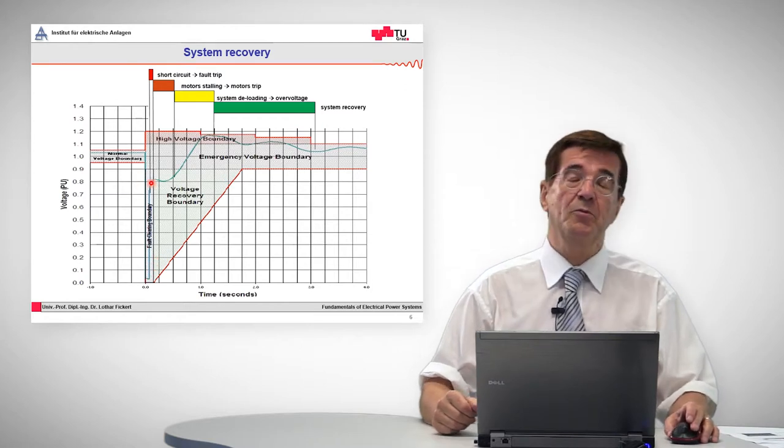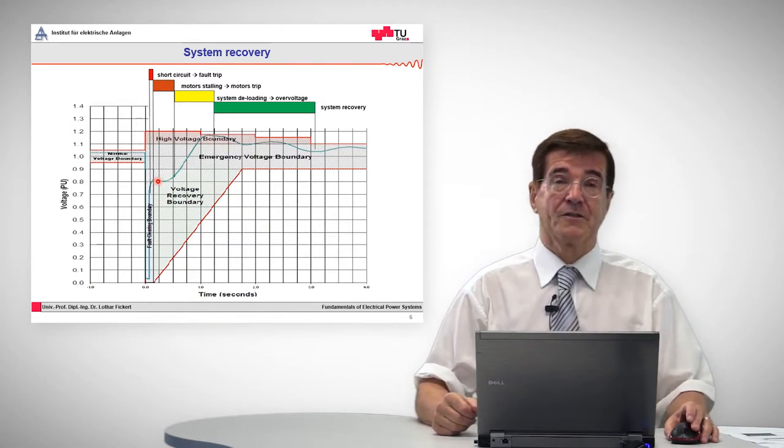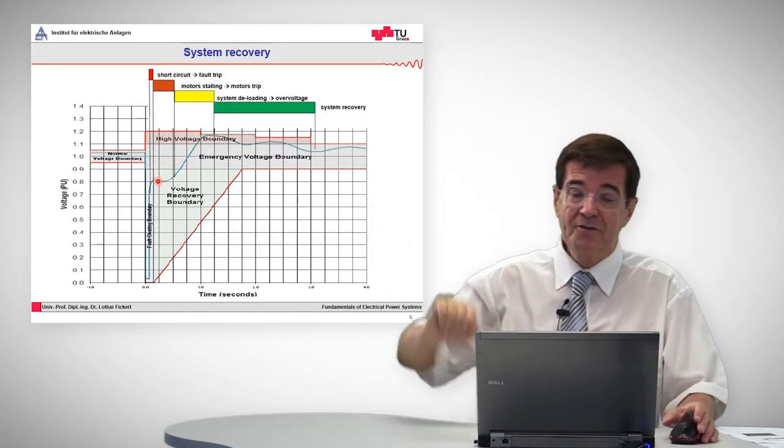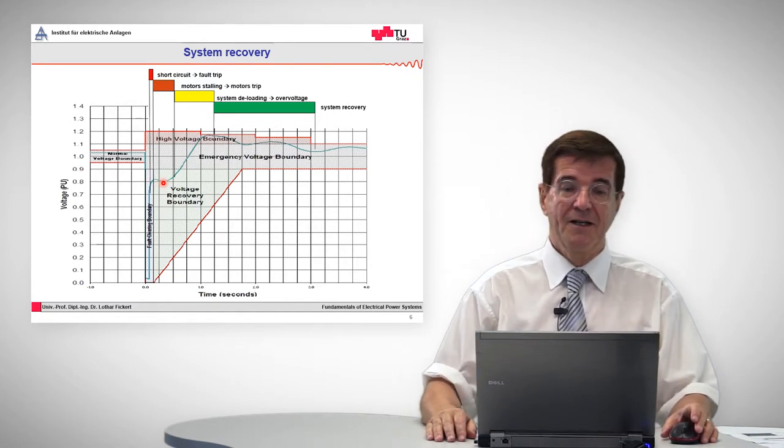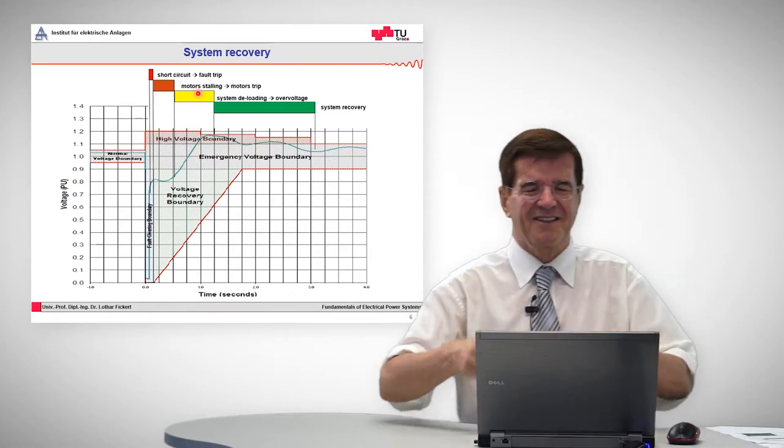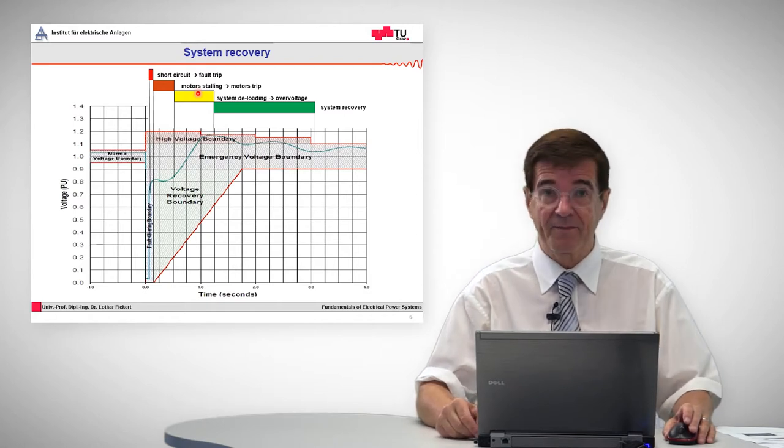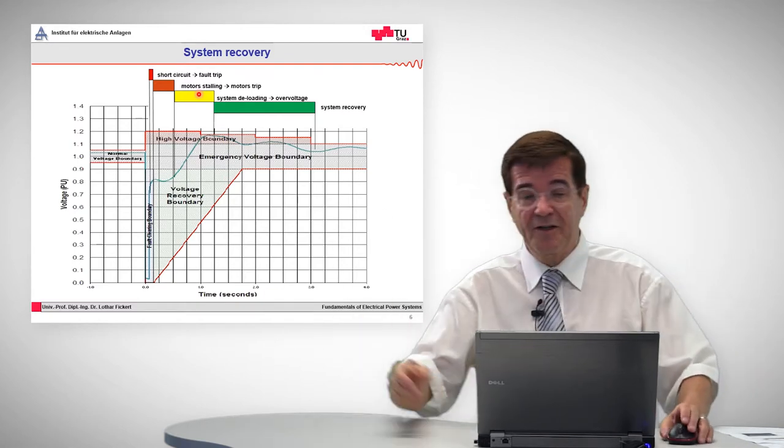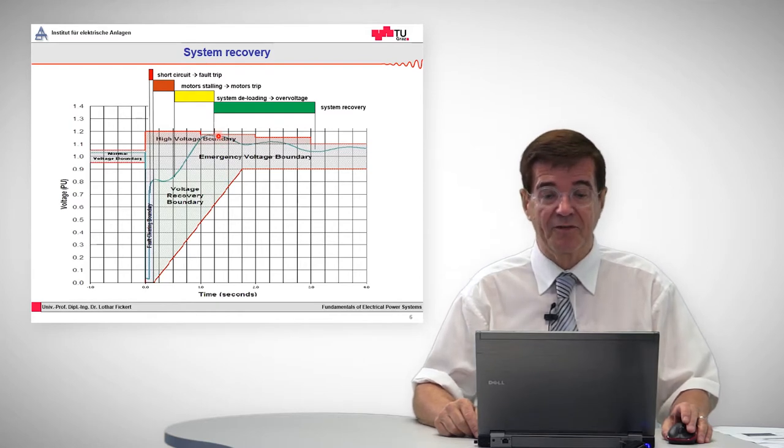Let's see what happens to the real-world network voltage after a fault has been cleared. Once a fault is cleared, one would expect that the voltage recovers to its original value, but it does not. Many motors installed in the grid might stall, they stop, they want to recover and restart, and they take up enormous amounts of current. It can happen that these will trip out. First you have an overload by the motors, then under load, that means you have a voltage excursion into the positive side of the voltage band.